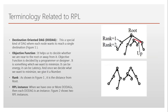A DODAG is a special DAG in which each node wants to reach a single destination. You can see in this graph that all nodes are directed towards one single node — that is the root, or destination they want to reach. Because every node is oriented towards one destination, it is called a Destination Oriented DAG, and these are the kinds of DAGs we find in RPL.